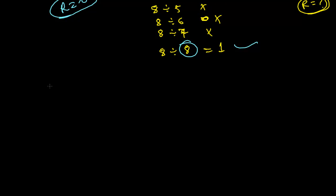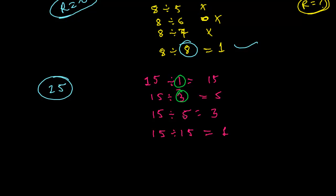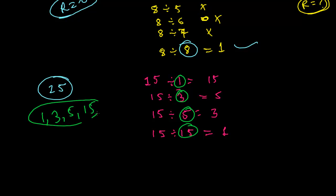Similarly, let's take the number 15. If you have a good concept of tables, you can find the factors quickly. 15 divided by 1 gives 15. 15 is divisible by 3, giving quotient 5. 15 divided by 5 gives 3. And 15 divided by 15 gives 1. So the factors of 15 are 1, 3, 5, and 15, because these four numbers exactly divide 15 with remainder 0.